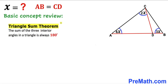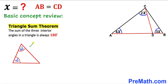Now let's go over the triangle sum theorem. According to this theorem, the sum of the three interior angles in a triangle is always 180 degrees. As you can see in this example, one angle is 70 degrees, another is 60 degrees, so the third angle must be 50 degrees — all three add up to 180 degrees.